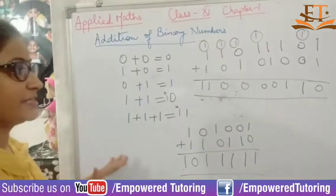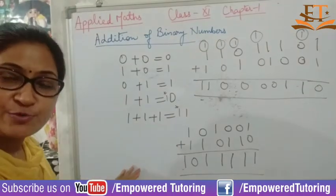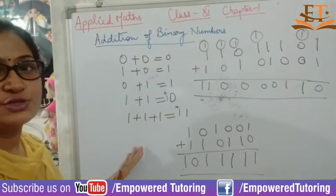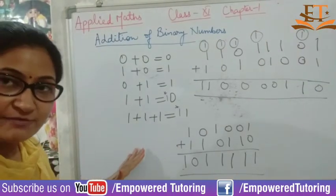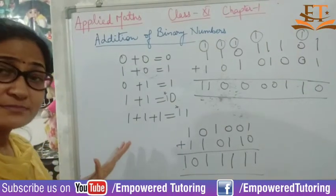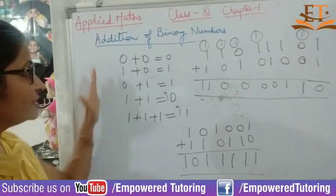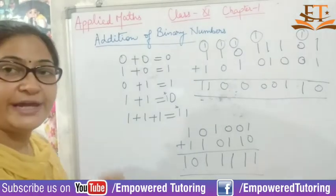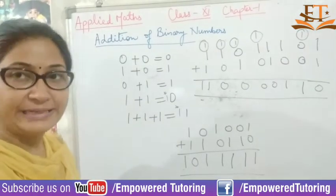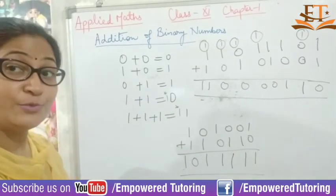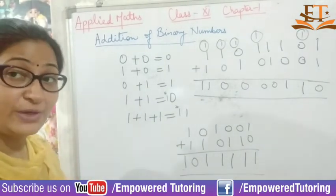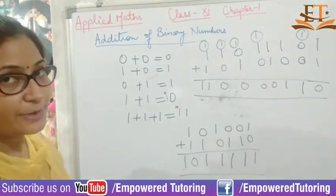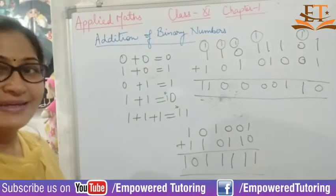Only this much is explained in your textbook, so we will focus only up to this level. This is how you add your binary numbers. I hope you have understood it well and will be able to solve them clearly.